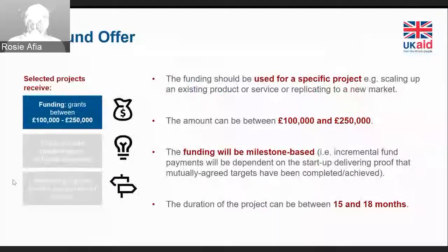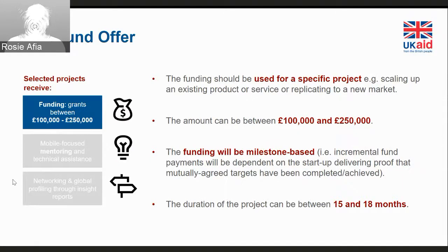We're offering grants of between £100,000 and £250,000 British pounds. This money has to be used for a specific project — for example, scaling an existing product or service or replicating into a new market. Funding will be given out on a milestone basis, so over the life of your grant you'll co-create around four to six milestones and that money will be distributed on the completion of each of those milestones. Projects can be between 15 and 18 months — you decide on what makes most sense for your innovation project.